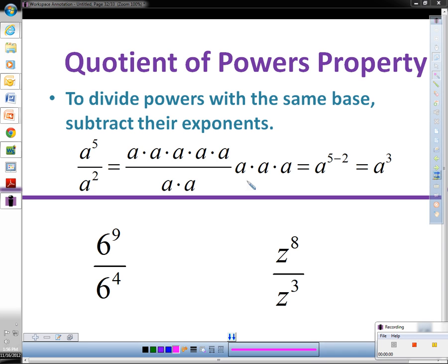So in this example, a to the fifth power divided by a to the second power, they both have the same base of a, so we can write it out like this. We have a to the fifth power is a times itself five times, and a to the second power is a times itself two times.